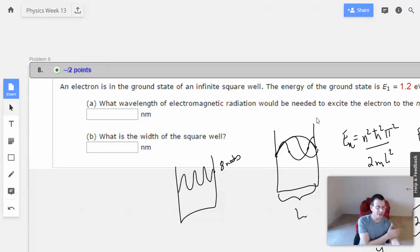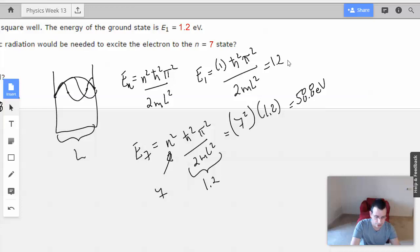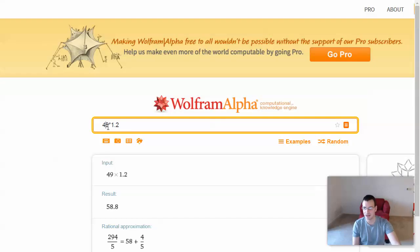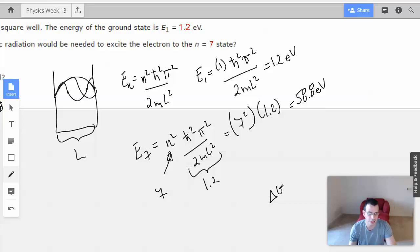So let's actually read the question. So it starts in a ground state. Energy in the ground state is that. What wavelength of electromagnetic would be needed to excite to the n equals 7 state? So we need to, we start at 1.2, and we go to 58.8. So I multiply it by 49. I should actually multiply it by 48, i.e. 7 squared minus 1. So we just want to find out how much energy we have to add. So 49 times 1.2 minus 1 times 1.2, which is 57.6. So delta energy equals 57.6 electron volts.